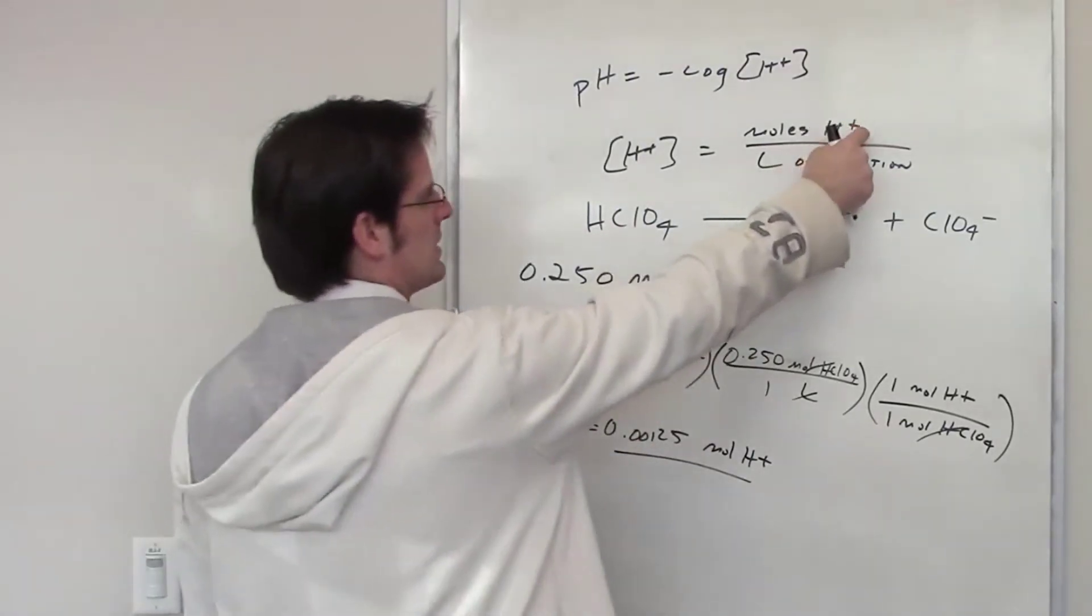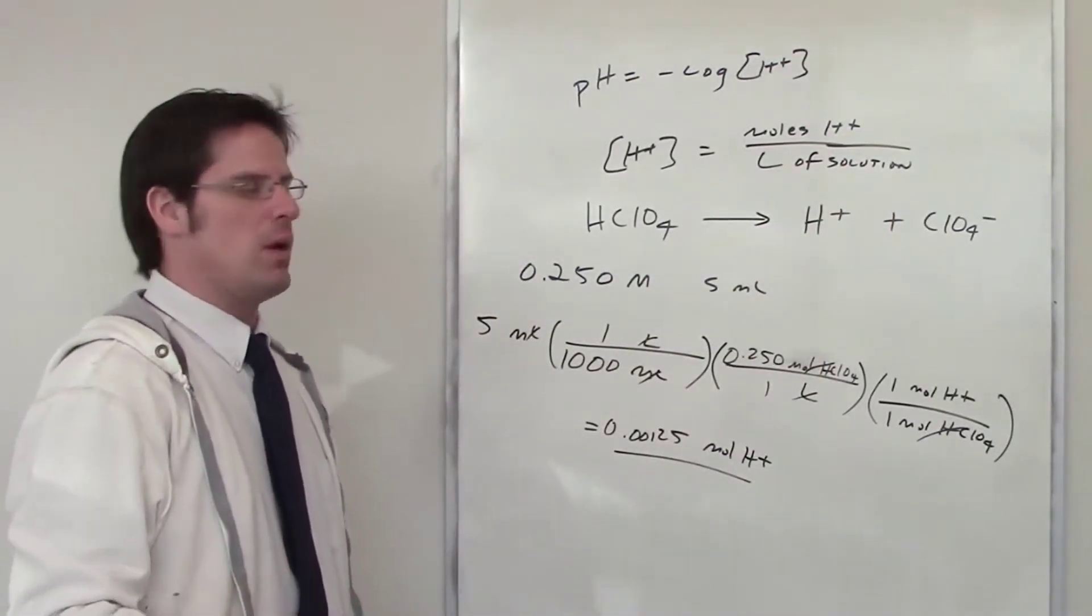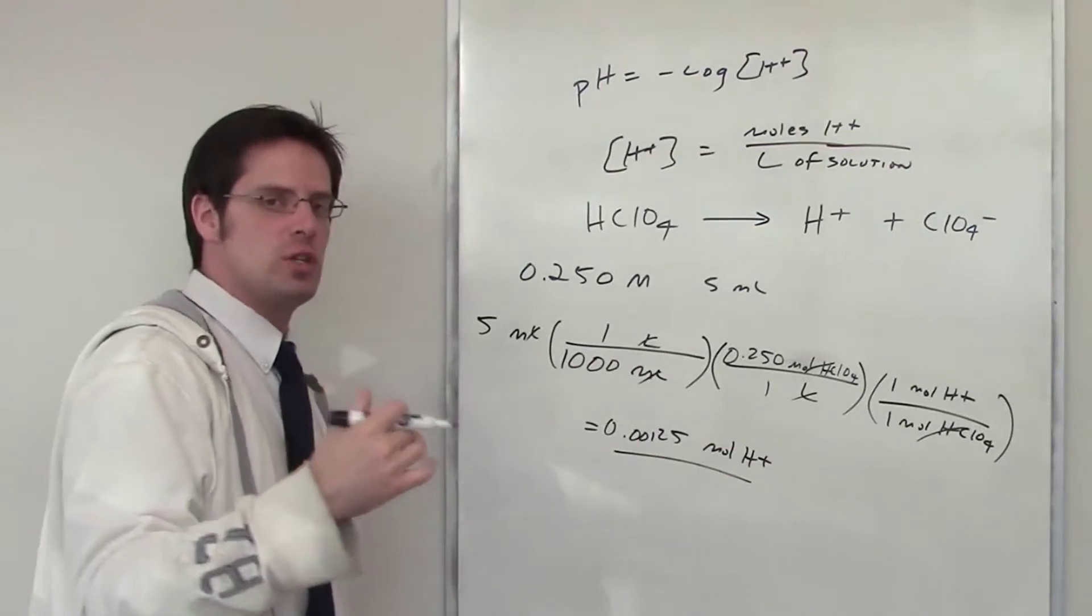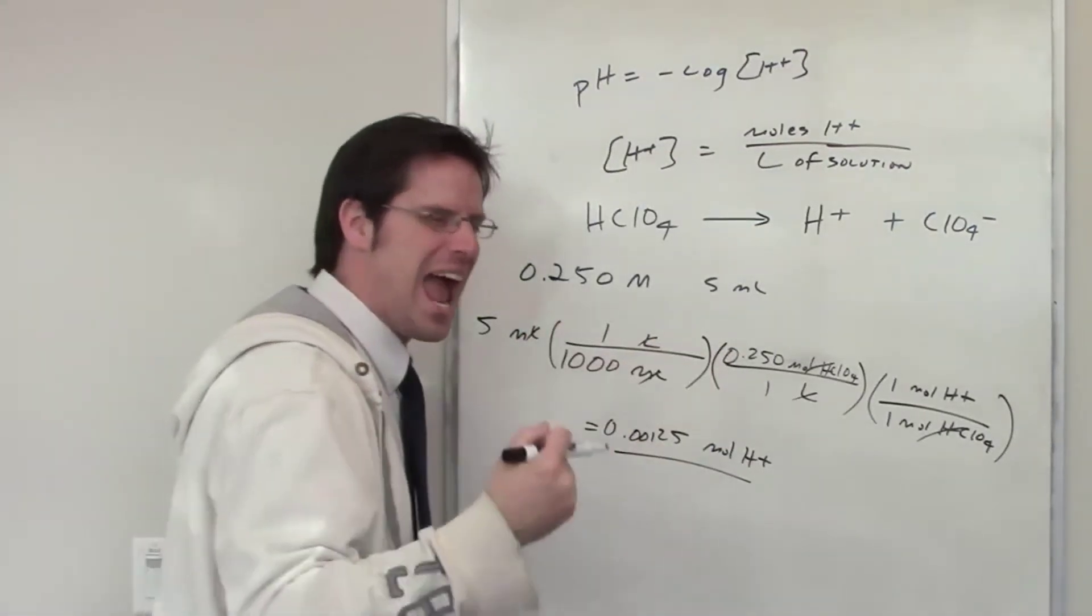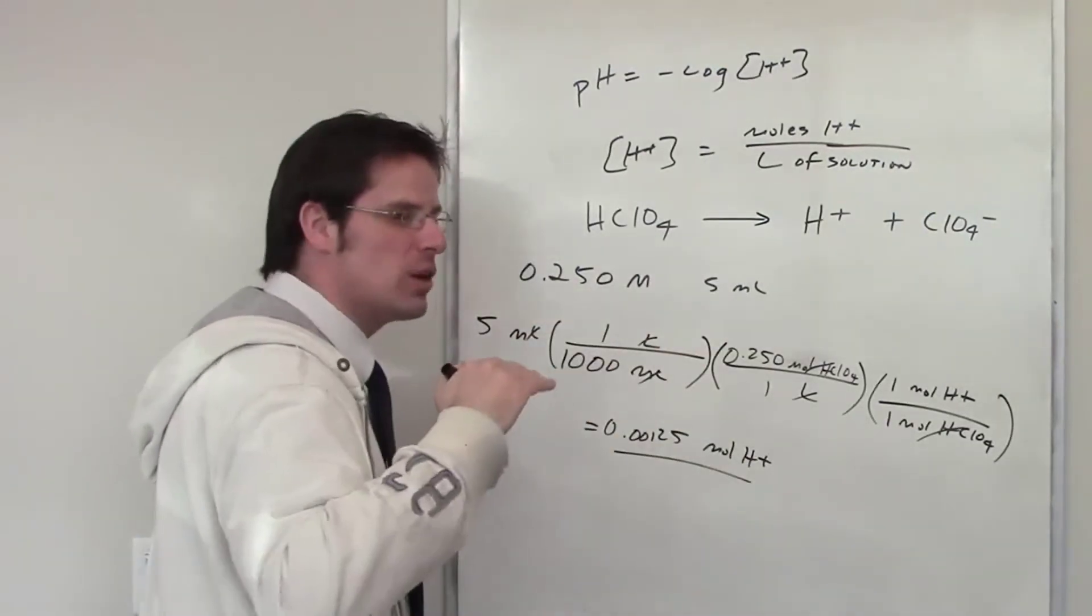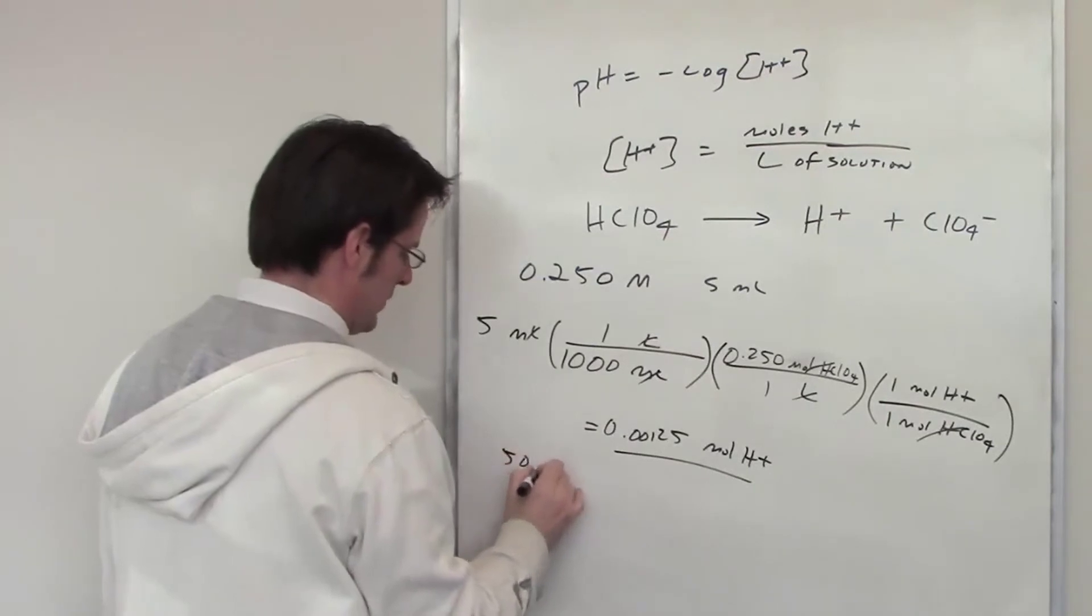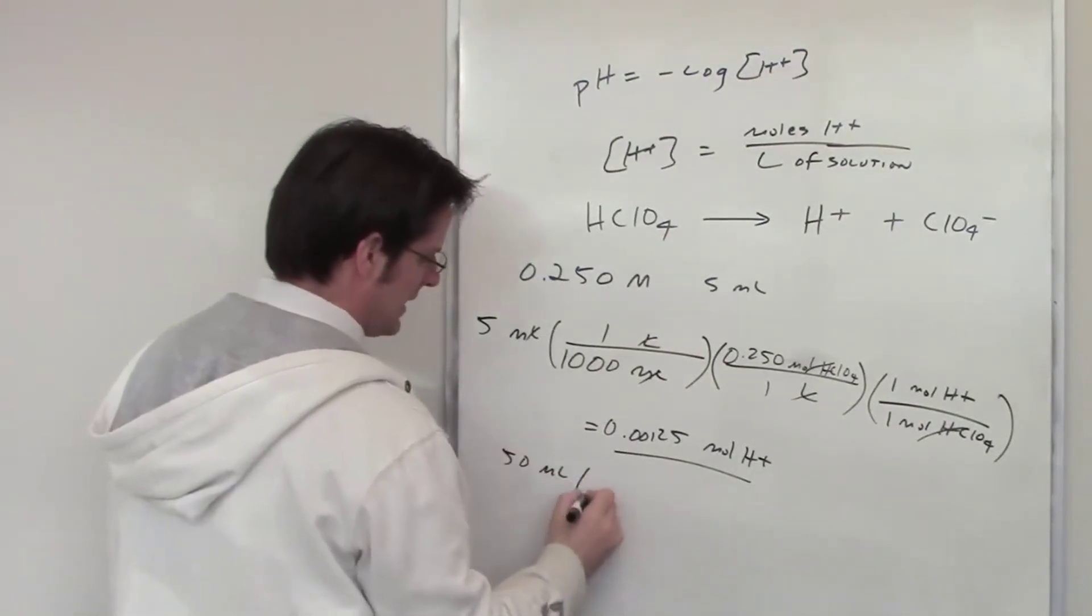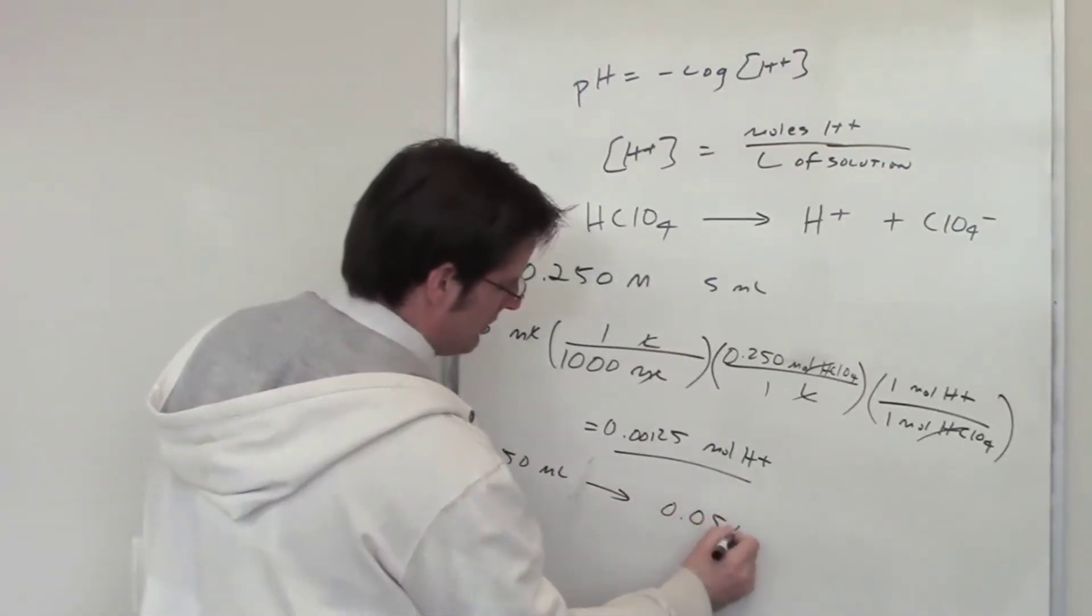I now have moles of H+, but I now have to figure out how many liters of solution. It tells me in this problem that once I've done that, I dilute the solution to 50 milliliters. That includes the 5 milliliters that we've already added. It just says that we add additional water up until we hit 50 milliliters. So the final number of liters of solution is, well, it's 50 milliliters. I convert that to liters, of course, by dividing by 1,000. Hopefully you're okay with that. That ends up being .05 liters.